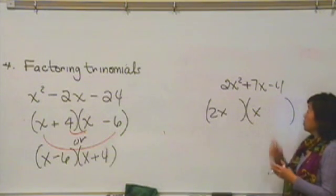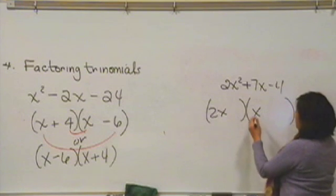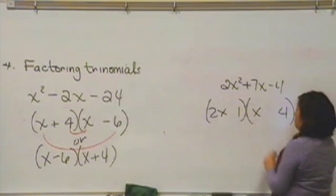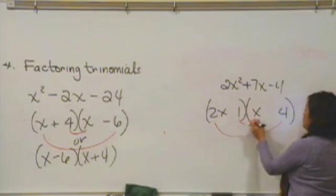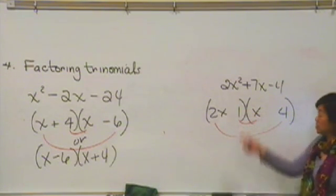So how could we get a 4? Let's try a 4 and 1. If we check the outside and the inside, 8x and 1x, oh yeah, 8 and 1, I can make a 7.